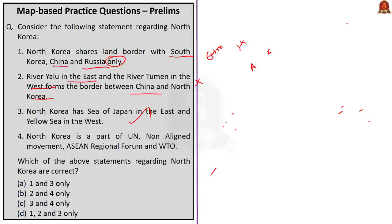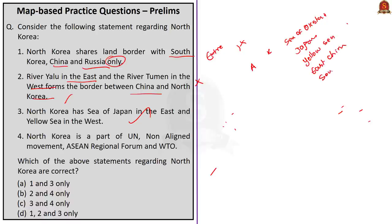In the last discussion, I said when a new location comes in the newspaper, take the atlas and have an aerial view of it. When you look at North Korea in the atlas, see all other physical features nearby. There are five marginal seas near North Korea: sea of Okhotsk, sea of Japan, yellow sea, East China Sea, and South China Sea. In the prelims, they may ask you to arrange these marginal seas from north to south.